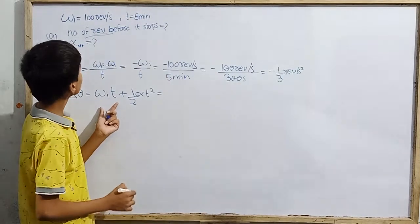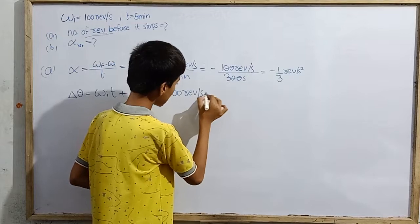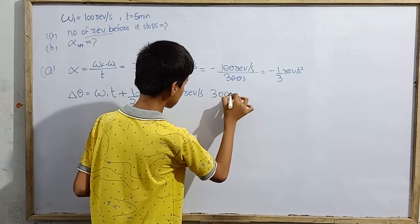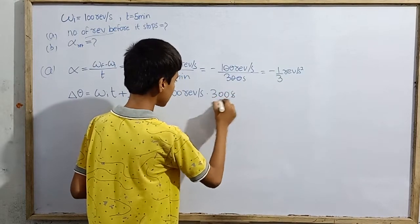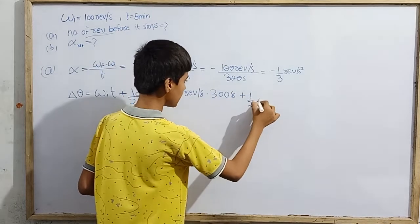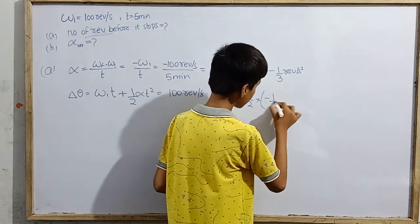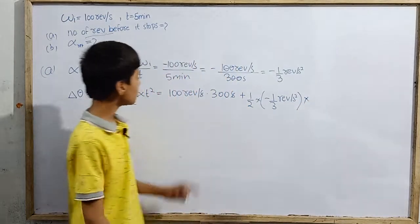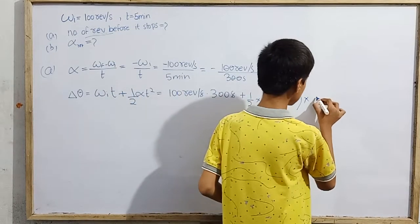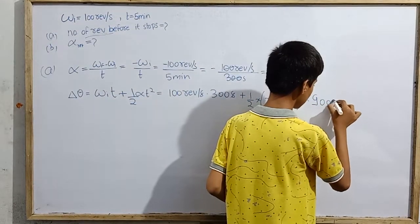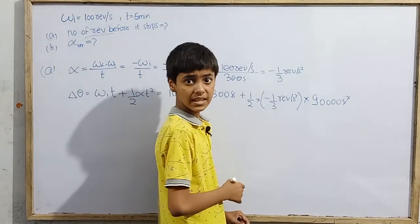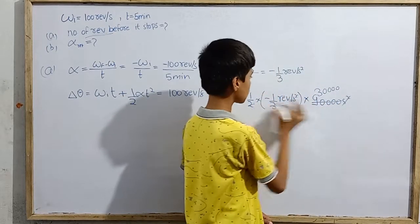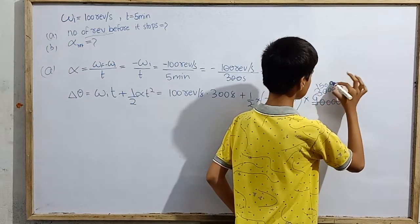Initially the fan was moving at 100 revolutions per second. The time t is 5 minutes, which is again 300 seconds. Substituting: Δθ = 100 rev/s × 300 s + ½ × (−1/3 rev/s²) × (300 s)². The seconds cancel in the first term, and seconds squared cancel in the second term.